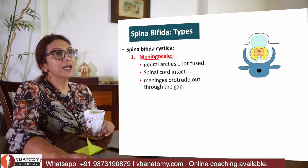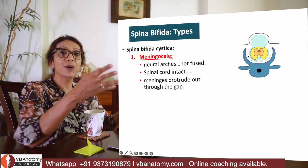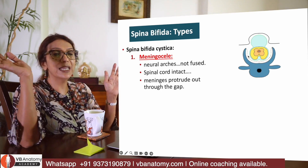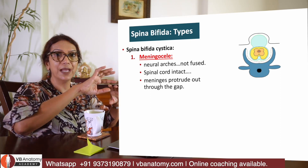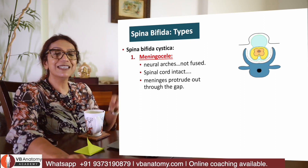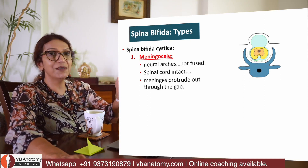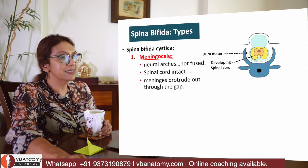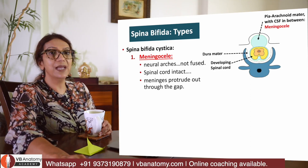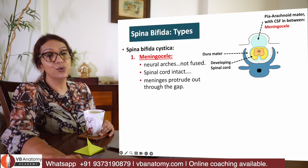Sometimes in a similar condition the meninges pop out and bulge out — the child is born with a proper bulge in the back. This bulge is cystic and fluid-containing. It is called meningocele, or spina bifida cystica. The dura mater is there, the developing spinal cord is surrounded by pia-arachnoid, which has formed a swelling posteriorly — that swelling is called a meningocele. This is a serious condition; were it to rupture, the patient's entire central nervous system is open.